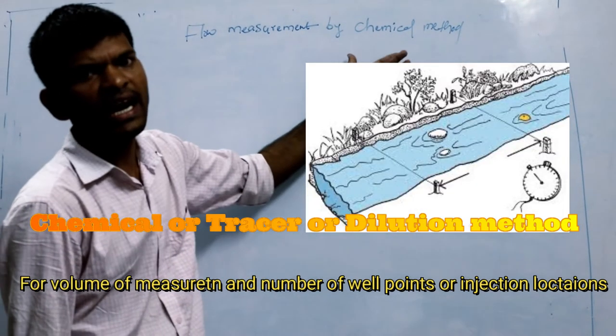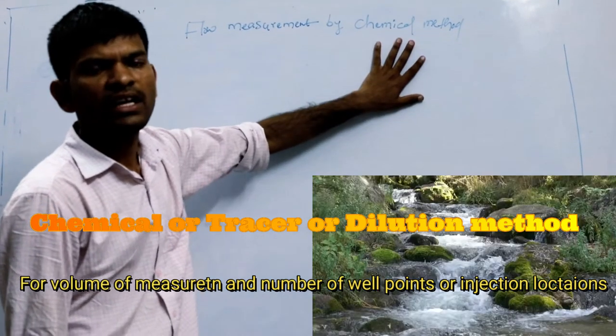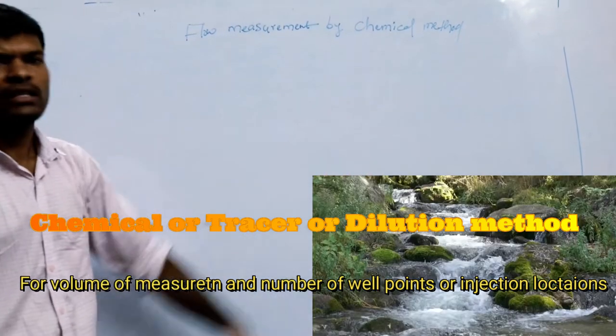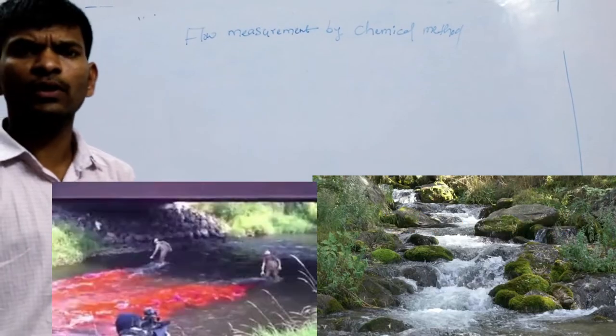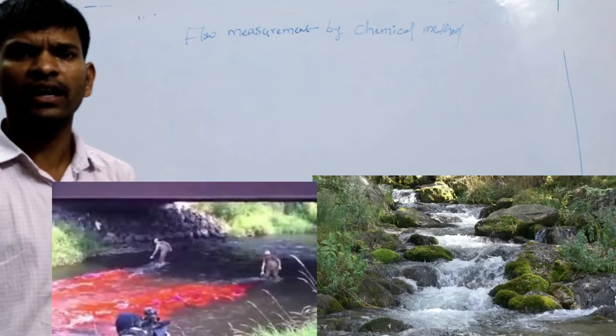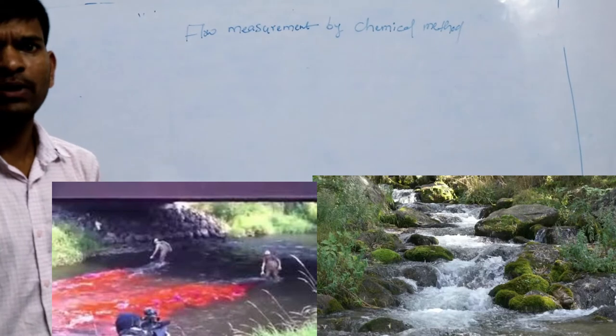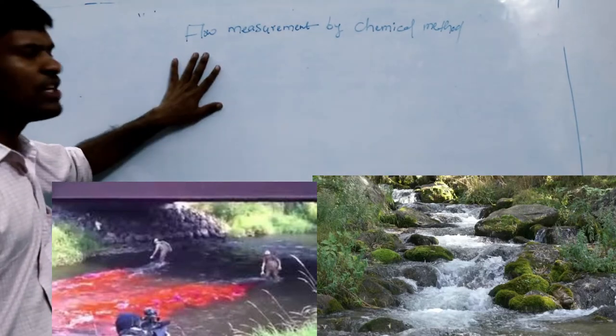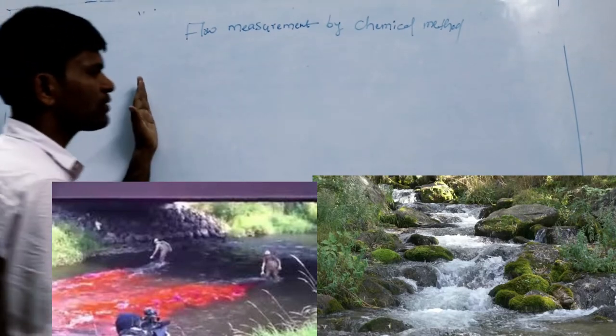In this condition, one of the simplest and cheapest methods is the chemical method. In the chemical method, a known concentration of your solution, like salt, dye, or any other radioactive materials, is introduced into a stream from section 1 to section 2.